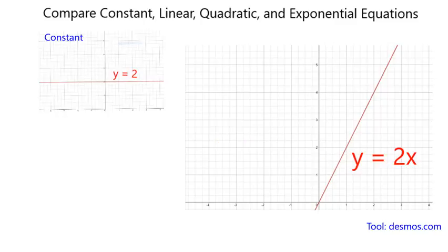The next graph, y equals 2x, is linear but not constant. It goes up at a constant rate of 2 times it goes up for every 1 time it goes over. We have a classic linear graph.